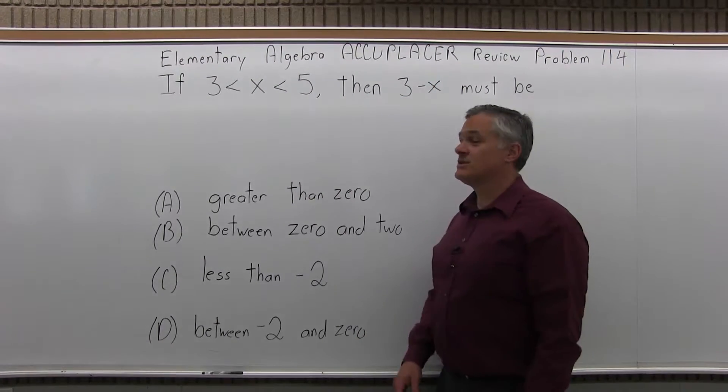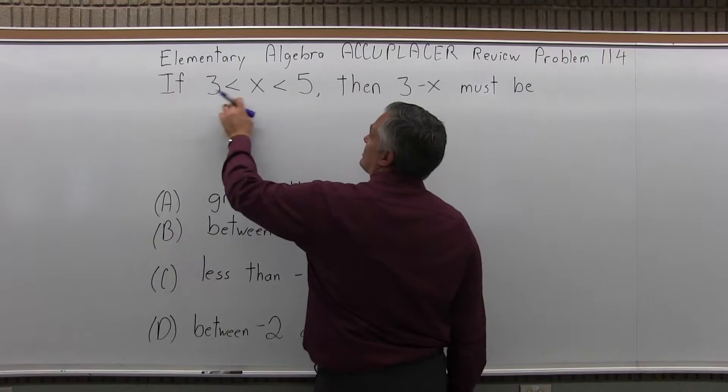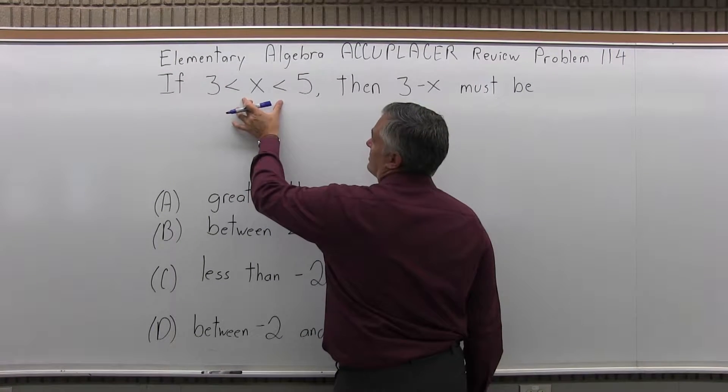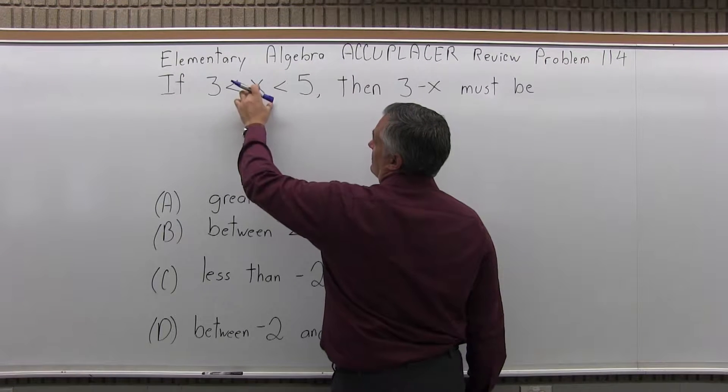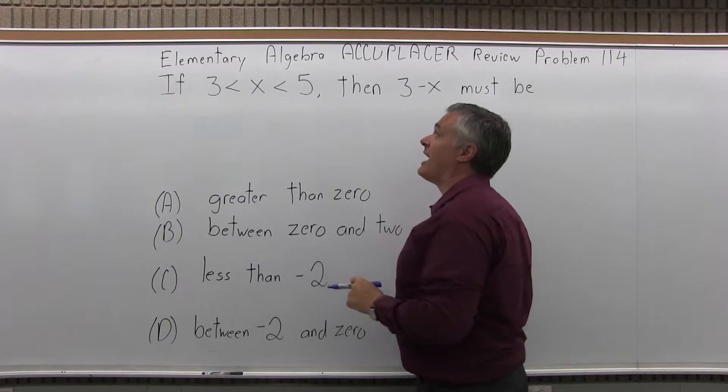We have four options to choose from. So basically, x is between 3 and 5. It's somewhere between 3 and 5. x is bigger than 3 and x is smaller than 5.